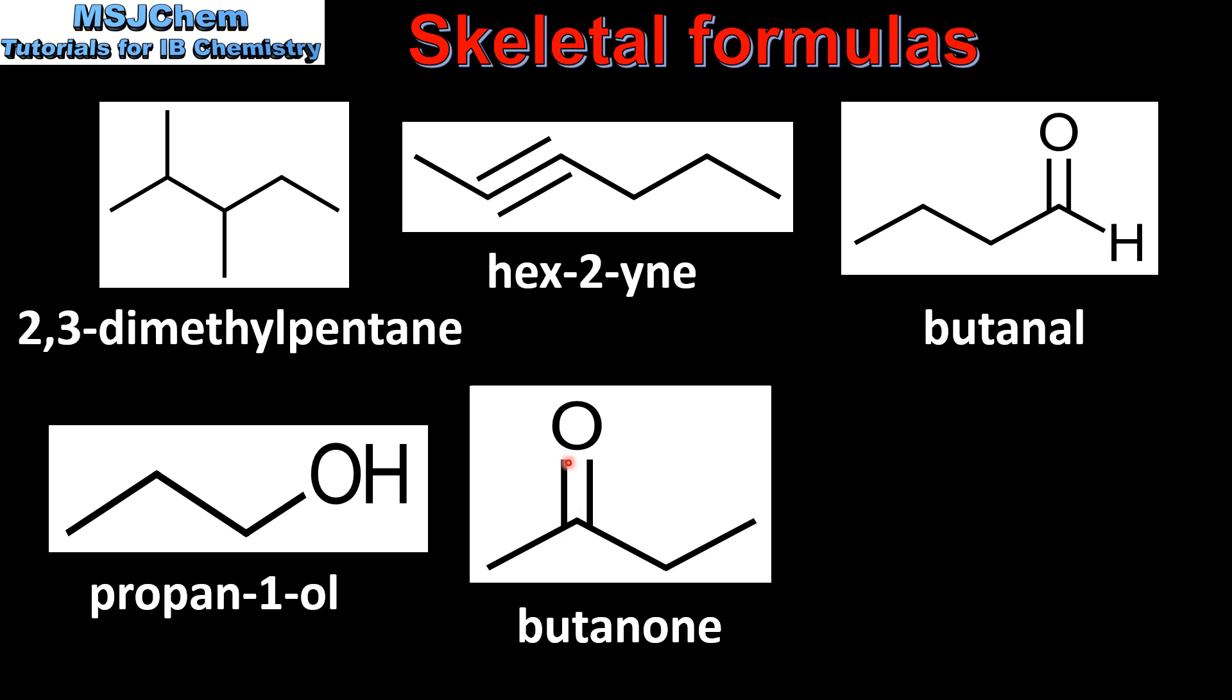Our next example has a carbonyl group and the carbon that's double bonded to the oxygen is also bonded to two other carbon groups, therefore it's a ketone. The longest continuous chain is four carbon atoms, therefore it's butanone.